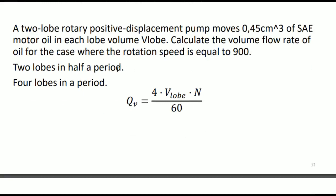During a half period, the volume of two lobes is transmitted. So in a full period, the volume of four lobe-volumes is transmitted. Therefore Q_V equals 4 times V_lobe times N over 60. The V_lobe value was given in the problem — just substitute the value and compute. For the second exercise: consider a gear pump with two rotors containing 14 teeth on each rotor. The volume of fluid confined between two gear teeth is 0.35 cubic centimeters. Multiply 14 teeth by 2 rotors by the tooth volume and you get 9.8 cubic centimeters per rotation.